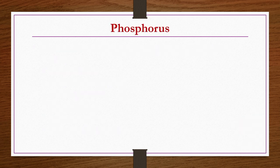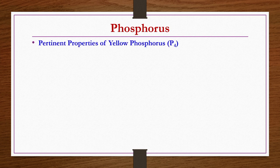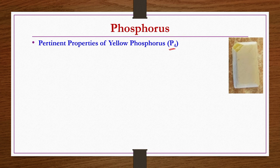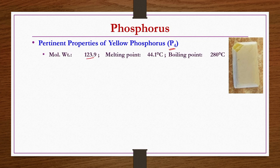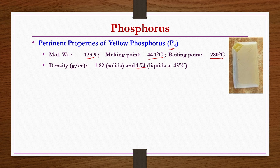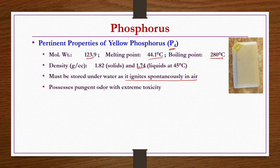Yellow phosphorus P4 has a tetrahedral structure with sp3 hybridization. It is actually white in color but turns yellow on exposure to light. It is a waxy soft solid that can be cut with a knife, but ignites immediately when it comes into contact with air. Molecular weight is 123.9, melting point is 44.1°C, boiling point is 280°C. Density in solid form is 1.82 g/cc and in liquid form at 45°C it is 1.74. It must be stored underwater as it ignites spontaneously in air, and possesses a pungent garlic-like odor with extreme toxicity.